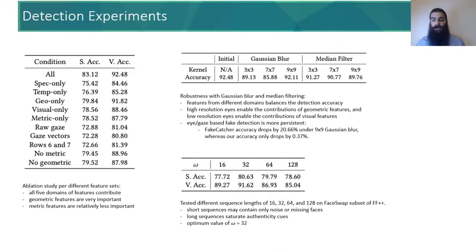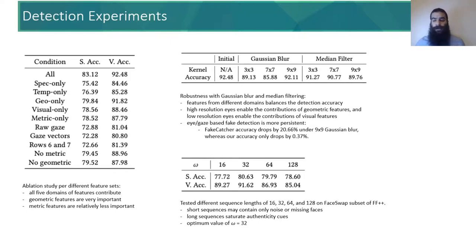On the bright side, our approach is 55 times more robust than FakeCatcher in this context, and detection accuracy only drops by 0.37% with a 9×9 Gaussian blur, whereas FakeCatcher drops more than 20%.